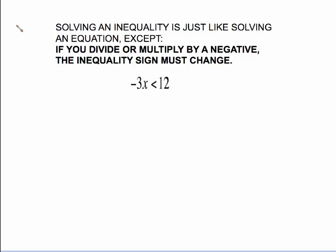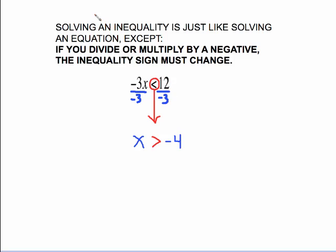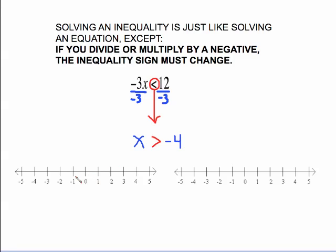There's one twist to solving inequalities: if you divide or multiply by a negative, the inequality sign must change. So for an inequality requiring dividing both sides by negative 3, as soon as you write the negative 3 in the division, grab that inequality sign and change it before doing any arithmetic — the common mistake is forgetting to change it. Change it right away. The negative 3s cancel, giving x, and 12 divided by negative 3 gives negative 4. To graph: it's plain greater than, so open circle on negative 4, shading to the right. With parentheses notation, use an open parenthesis shading to the right.